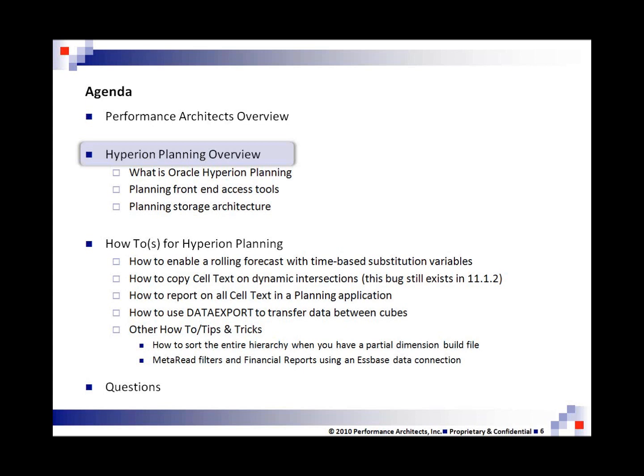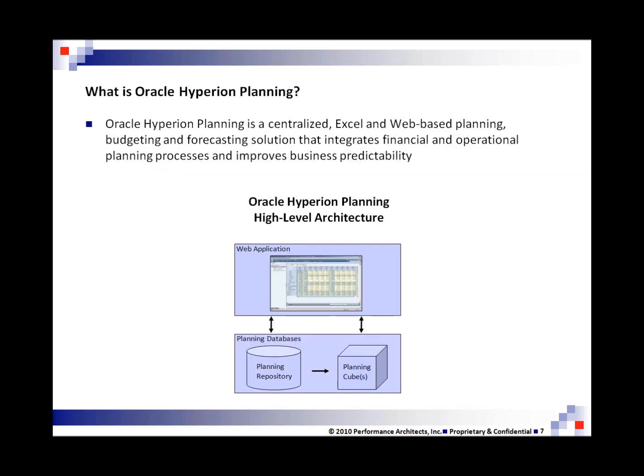Next up is an overview of planning, and I'll try to keep this short. Really, what is planning? Planning is a centralized Excel web-based planning, budgeting, and forecasting solution. Hyperion Planning is a web application that sits on top of two centralized storage technologies. The key is centralized — there's a centralized application repository, a relational database, and one or more Essbase cubes. That's pretty much the storage architecture.